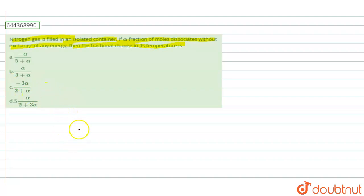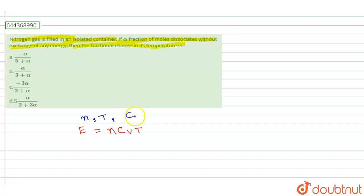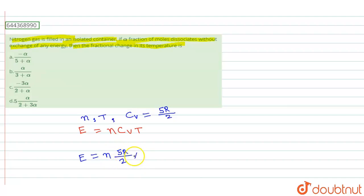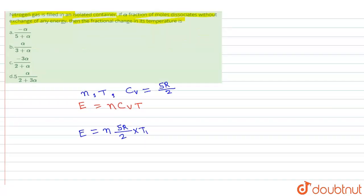As we know, internal energy E is equal to N·Cv·T. Initially, let the number of moles be N and the temperature be T1. Since nitrogen is diatomic, Cv = 5R/2. So we can write E = N · (5R/2) · T1.